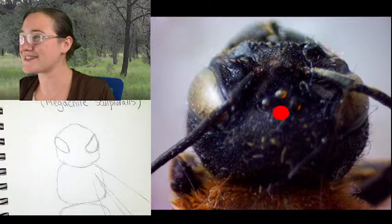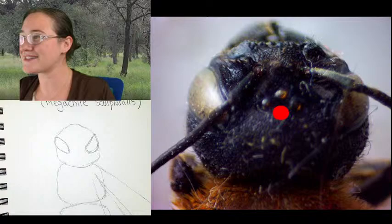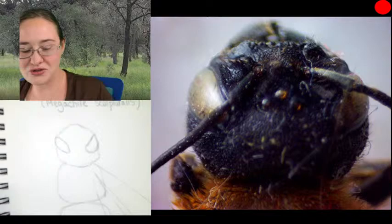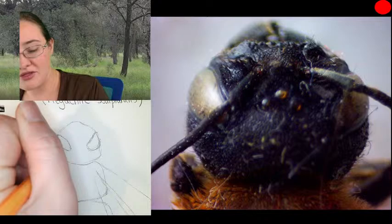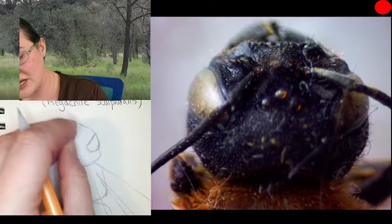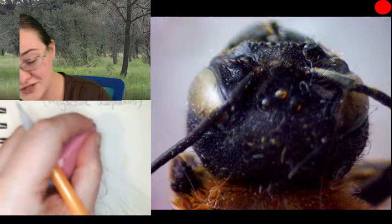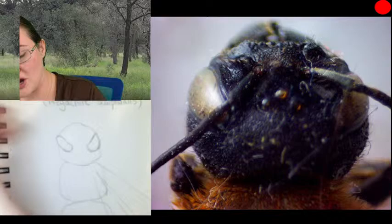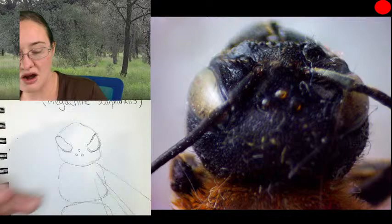In between these two compound eyes we have three little ocelli — these are our simple eyes. You can see they make a little triangular formation: one, two, three. Those three individual lenses are not for color or shapes — they're more for light and dark. They have the ability to see shadow, so if a large bird was flying overhead, they would be able to see the shadow. They also know if they are out in the open or underneath a rock or in their home. Those ocelli are important — spelled O-C-E-L-L-I.